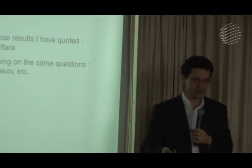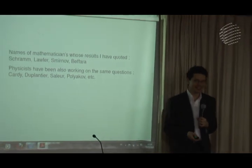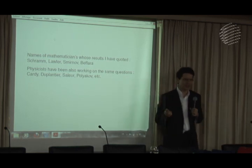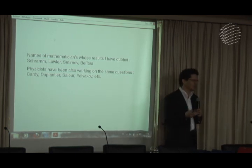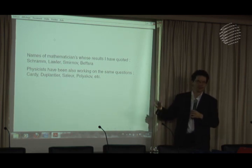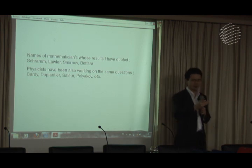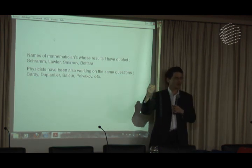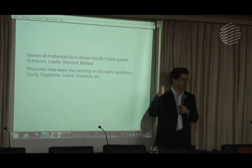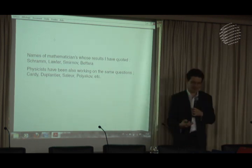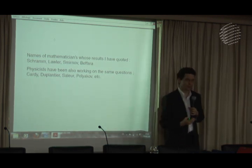Everything I said — almost the entire talk, the first half — could have been given by a theoretical physicist, and maybe it has. Maybe some of you remember that one of these people was here 30 years ago and gave basically the same story. Except that there wasn't this idea of pushing and defining random curves. But the phase transition, the critical exponents, the 4/3, the 91 over 48 — they had arguments providing these numbers.